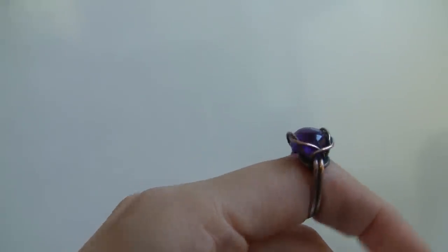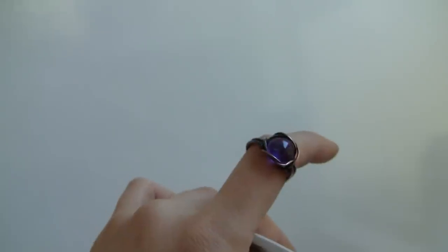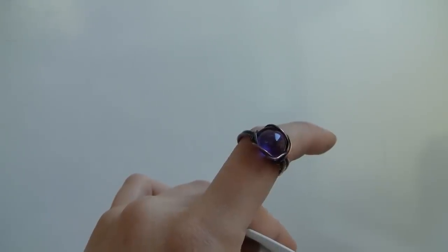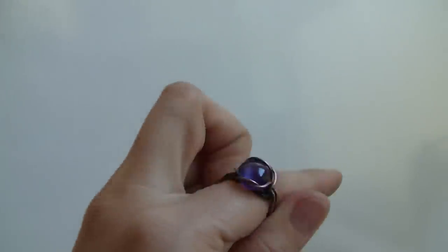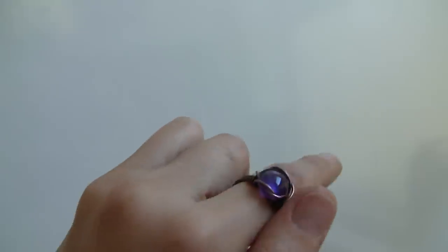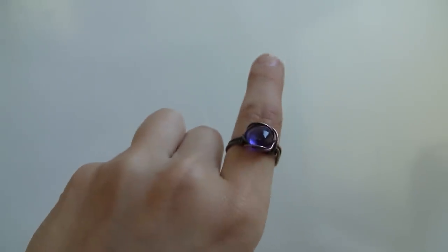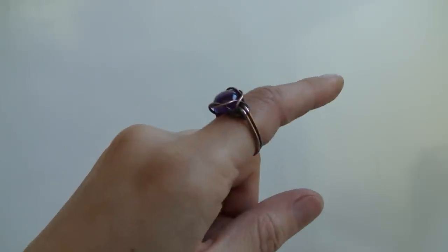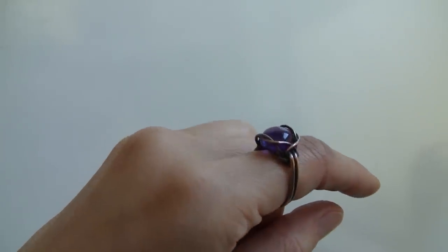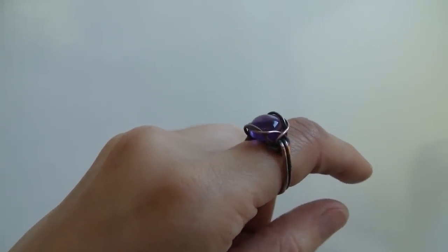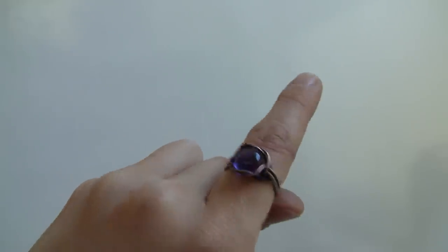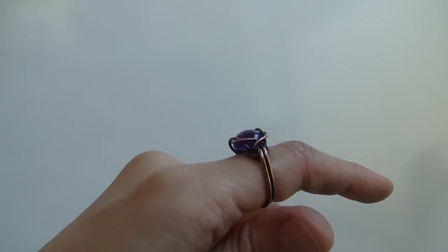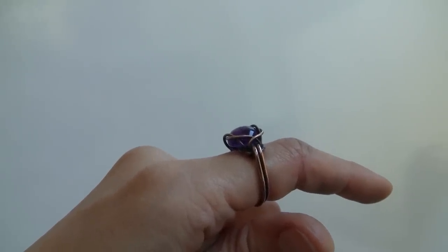But yeah, that's it. That is basically how I tumble and clean my jewelry now after oxidizing. And one more quick thing is that the tumbler is supposed to also work harden your metal. Now I do notice it maybe making it just ever slightly firmer and harder. But I wouldn't say that it makes the copper like really, really hard or anything.